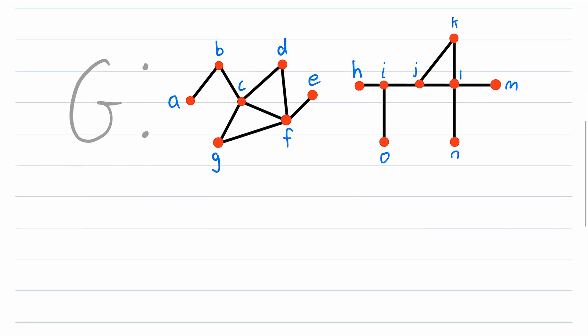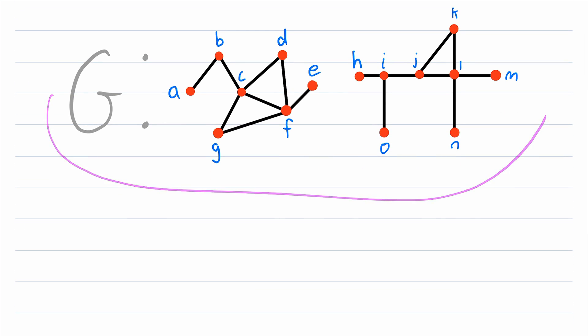We begin by looking at this beautiful graph G. Notice that G has two components, but what if we were to remove the vertex J as well as its incident edges, then how many components would G have? Well, let's figure it out.